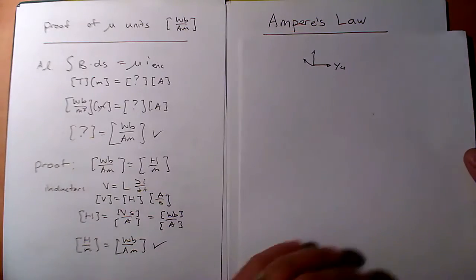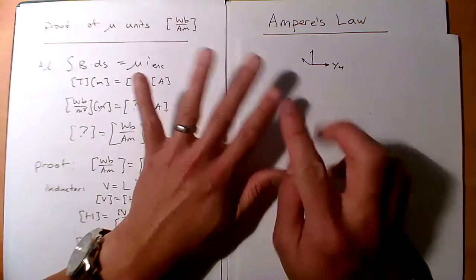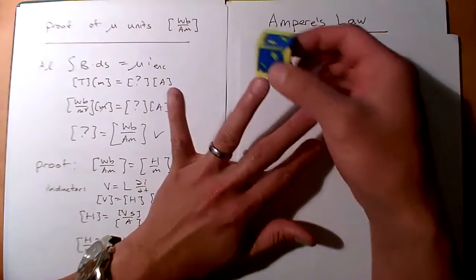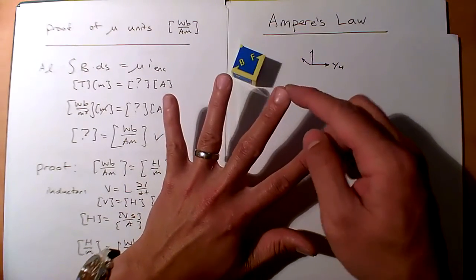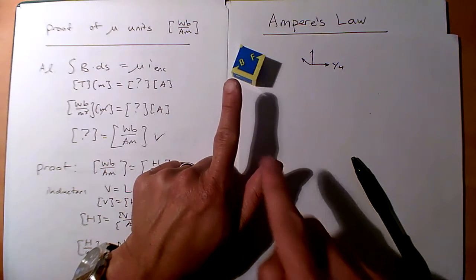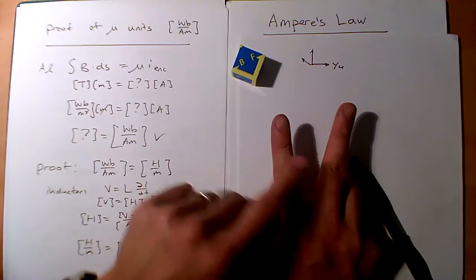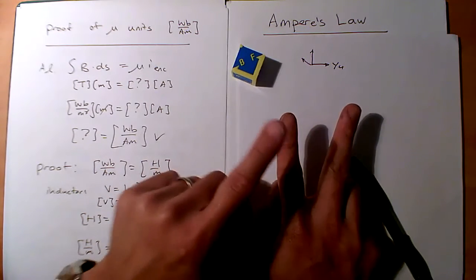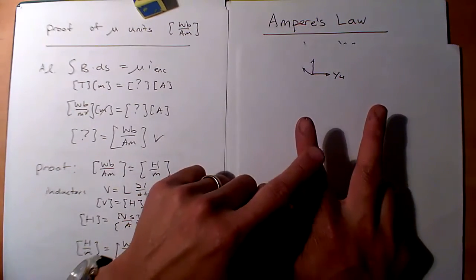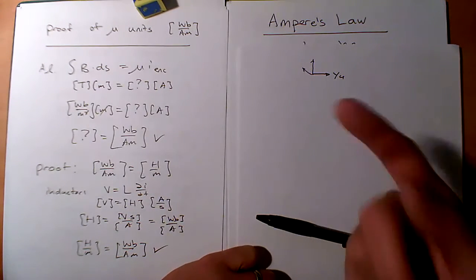Now let's go into two useful Ampere's Law equations. Let's stop and review — we've got seven things: the definition of flux, the Lorentz force (from the cube), the B convention (north to south), and the four Maxwell equations: Gauss's Law for electricity, Gauss's Law for magnetism, Ampere's Law, and Faraday's Law. We're on Ampere's Law right now. We had two right-hand rules: one for a wire and one for a coil.